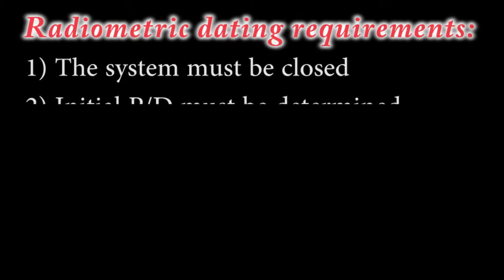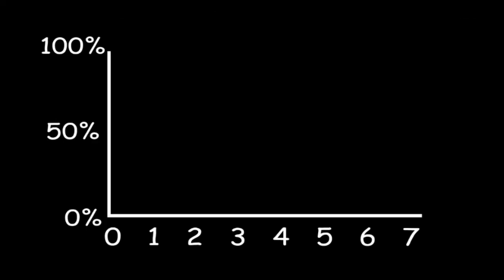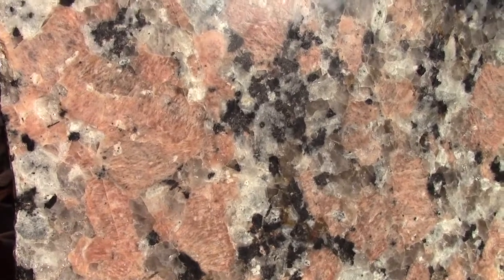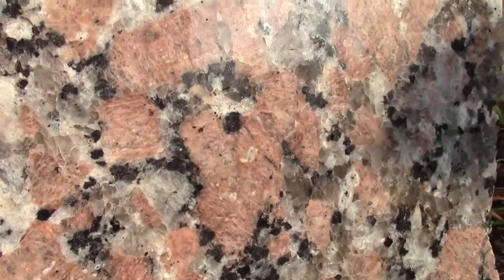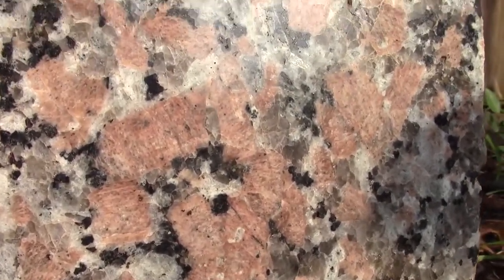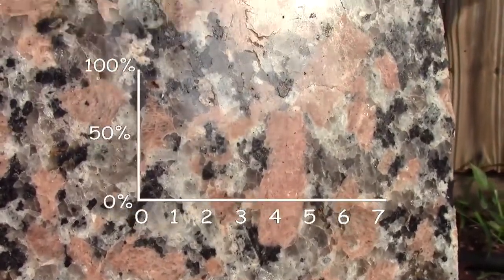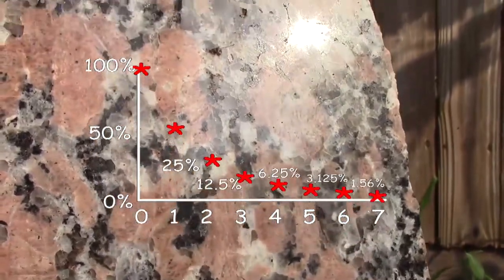The second assumption is that we know the relative amount of parent and daughter in the sample at its formation. In our last episode, I indicated that you started with 100% parent and 0% daughter to make the calculations easy. Fortunately, there are some systems that do just that. When a K-spar crystal forms, it can't take any argon into the crystal lattice, as argon is an unreactive noble gas. But there is plenty of potassium-40 in a potassium feldspar, so the initial ratio is 100% potassium-40 and 0% argon-40.